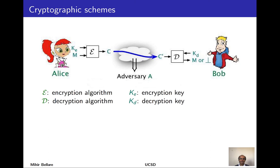In cryptography we are concerned with designing schemes for many different goals. It's worthwhile to start by taking a broad look at what a scheme is and the issues involved in its design, analysis, and in determining precise ways of formulating security. Here we are looking at a scheme for encryption — its goal is to communicate information across an insecure medium, and it does that based on keys, starting with the assumption that Alice and Bob are in possession of keys.